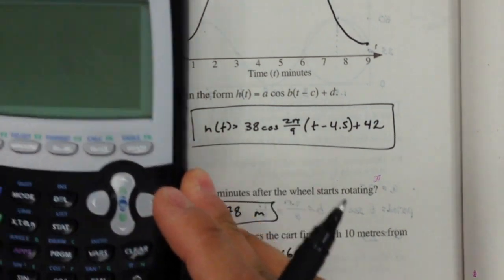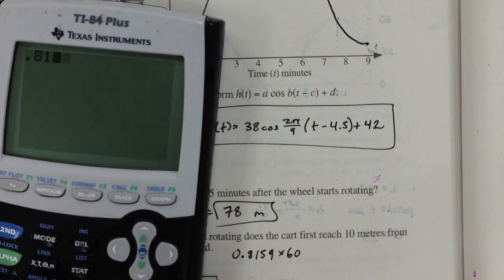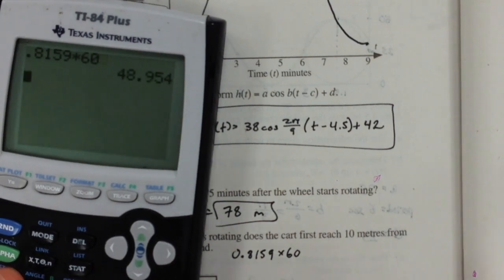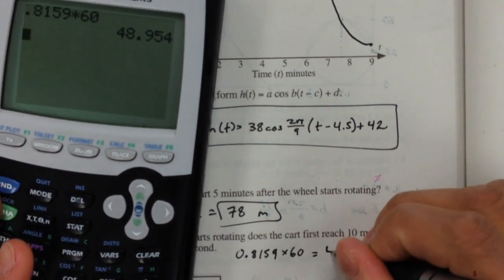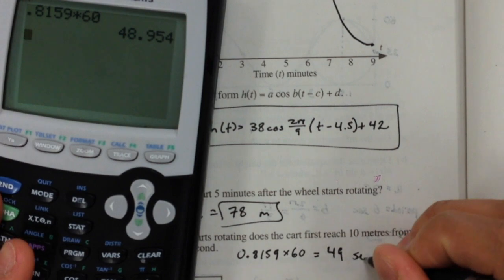If we multiply that by 60, 0.8159 times 60 gives us 49 seconds.